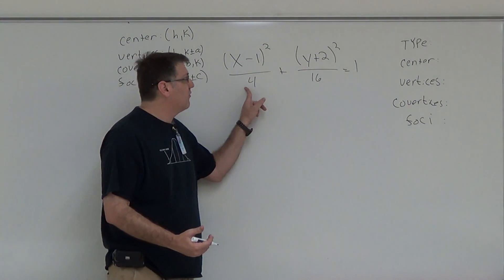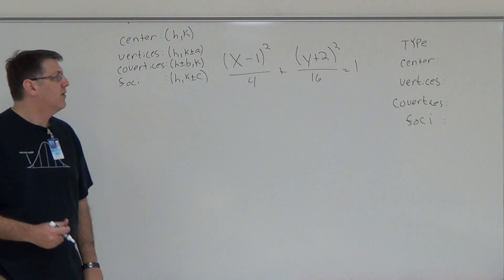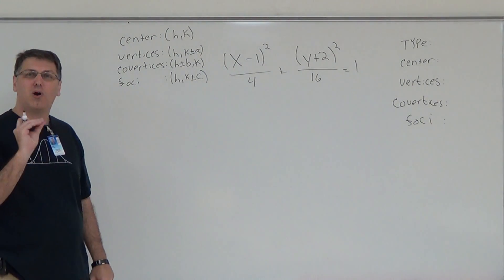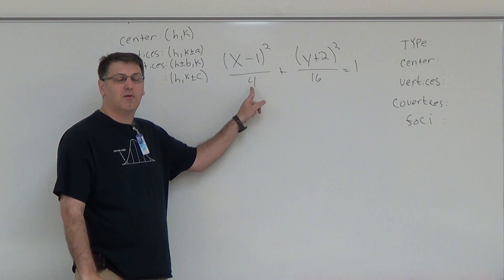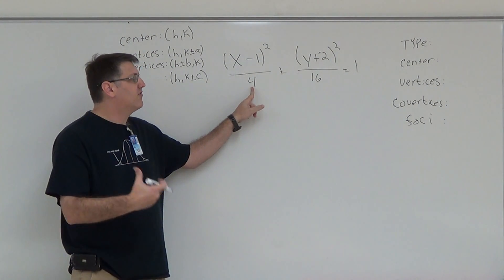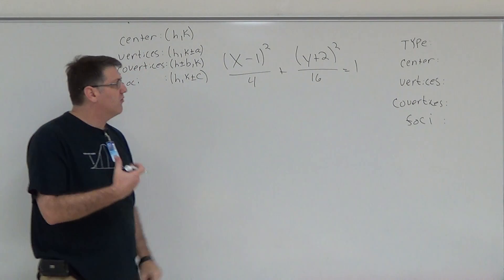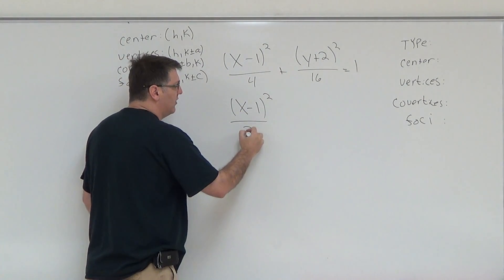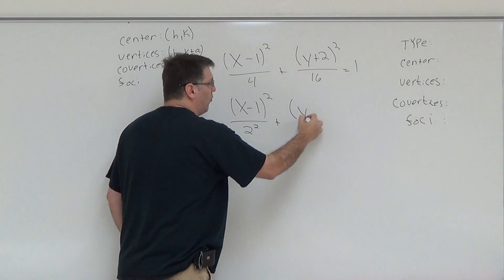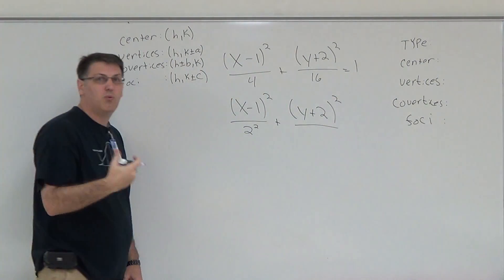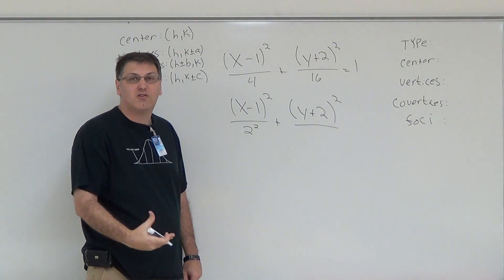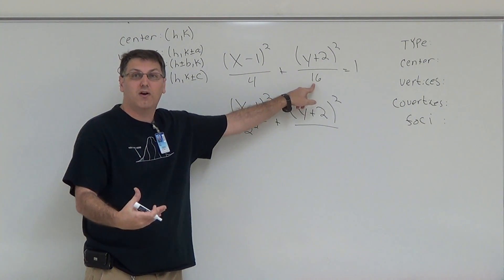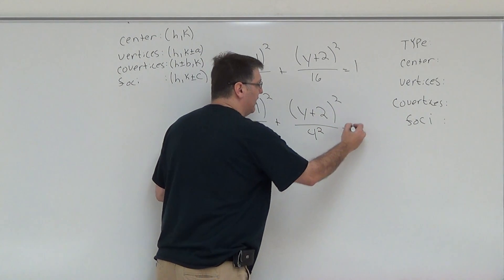Now, your equation right here is x minus 1 squared over 4 plus y plus 2 squared over 16 equals 1. It looks like it's in standard form, but it's not quite there yet because your bottoms need to be a number squared. So we have to rewrite our bottoms as some number squared that will equal 4. Conveniently, 2 squared equals 4, so we would rewrite the equation as x minus 1 squared over 2 squared plus y plus 2 squared over 4 squared equals 1. This is now standard form.